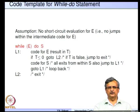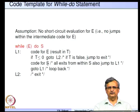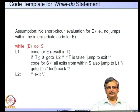For the while construct, again assuming no short-circuit evaluation: label L1: generate code for E with result in t; if t <= 0 (false) jump to L2 (exit); execute code for S; goto L1. Jumps out of S must also jump to L1 so that can be taken care of.